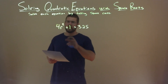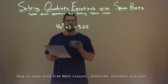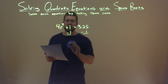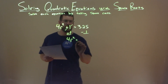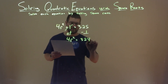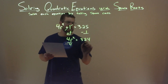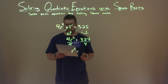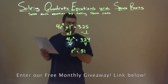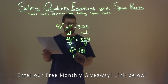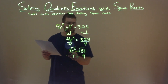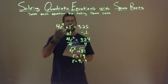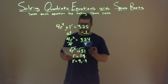We're given 4r squared plus 1 equals 325, and we want to solve this equation by taking square roots. I want to get r squared by itself, so first subtract 1 from both sides — the 1s cancel, leaving 4r squared, and 325 minus 1 is 324. Now divide both sides by 4 — the 4s cancel, leaving r squared by itself. 324 divided by 4 is 81. Opposite of square root is square root, so we square root both sides. R is now by itself, and the square root of 81 is 9. But since we took the square root over the equal sign, it's positive and negative. So r equals a positive 9 and a negative 9. Final answer: r equals 9 and negative 9.